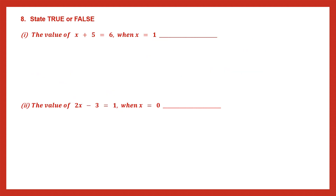Question 8: we have to say whether these statements are true or false. The first statement says the value of x plus 5 equals 6 when x is 1. This is the expression and they're saying it will equal 6 if we make x equal to 1. So in the place of x let's write 1 plus 5. 1 plus 5 is 6. So this statement is true.